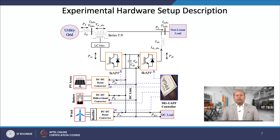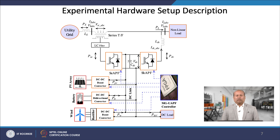Moving to the experimental hardware setup, here we can see the single line schematic diagram of the corresponding experimental hardware setup. It consists of two back-to-back voltage source converters (VSCs) connected through a common DC link between the utility grid and the load. The grid side converter acts as a series active filter connected through a series injection transformer, and the load side converter acts as a shunt active filter connected through an inductor. The series active filter behaves as a pure sinusoidal current source and offers a high impedance path for load harmonics. An LC filter is used to eliminate the switching harmonics.